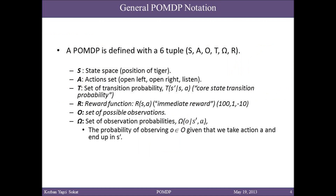A POMDP is defined with six variables. The first four are the same as in the original MDP. S denotes the state space, A denotes the action set, T denotes the set of transition probabilities, and R denotes the reward function, which depends on the state and action. In addition, we have a set of observations denoted by O, and a set of observation probabilities denoted by omega.